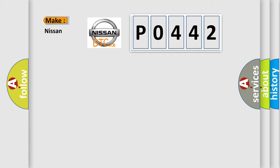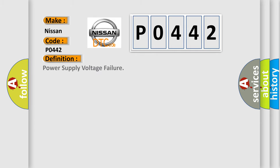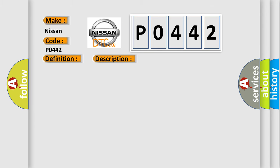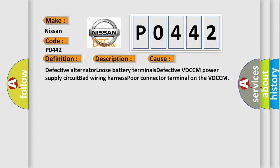What does the diagnostic trouble code P0442 interpret specifically for Nissan? The basic definition is power supply voltage failure. This is a short description of this DTC code: VDCCM AMP power supply voltage error — ABS does not operate, EBD may not operate, VDC does not operate. This diagnostic error occurs most often in these cases: defective alternator, loose battery terminals, defective VDCCM power supply circuit, bad wiring harness, or poor connector terminal on the VDCCM.